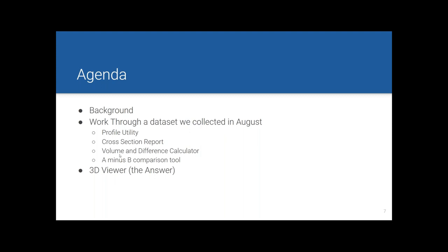The volume and difference calculator can be used in a couple of different ways. It compares two different grids and computes both the difference and, if they're bathymetry grids, the volume difference — useful for dredging comparisons. I also want to talk about our A minus B comparison tool, which isolates where differences actually occur and works with both bathymetry and backscatter. And finally, I want to show off this fantastic data set in three dimensions using some cool tools in SonarWiz.